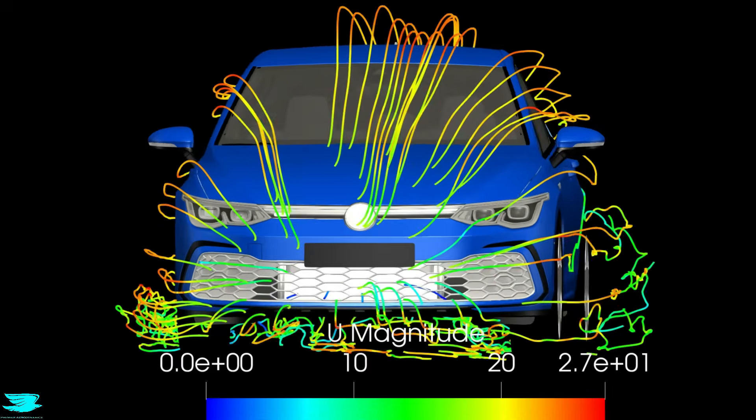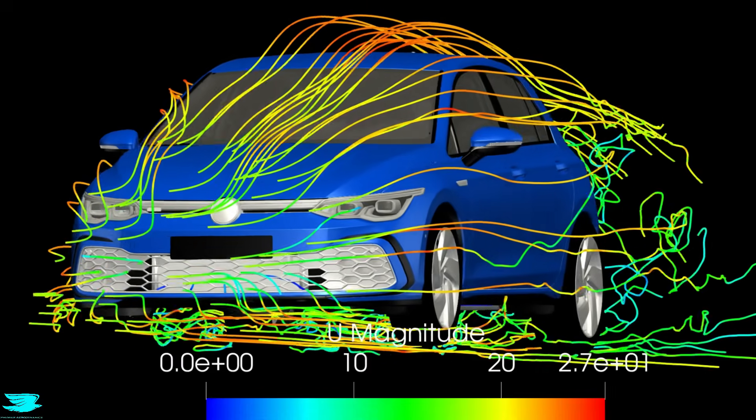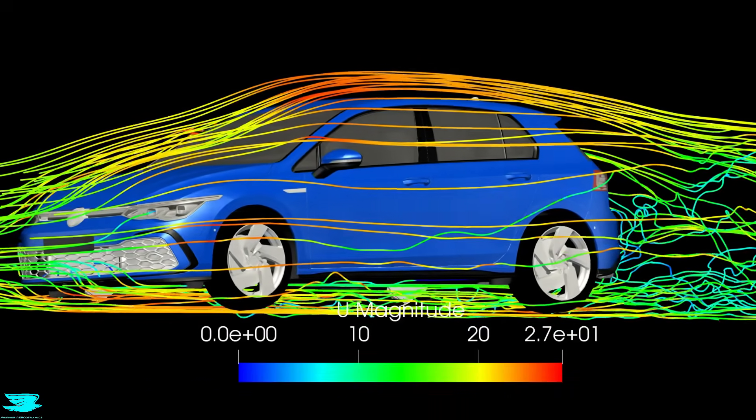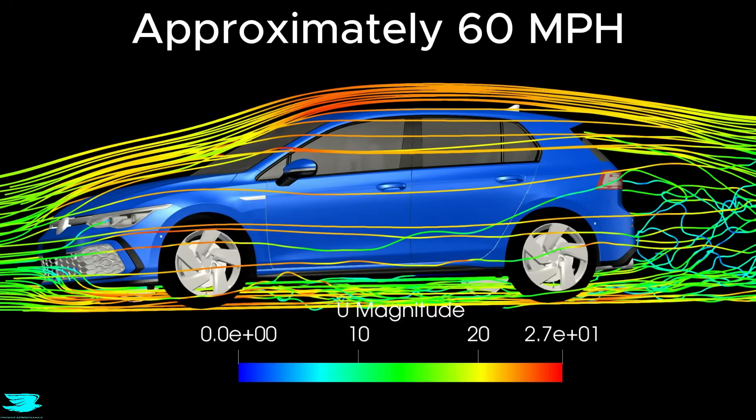We first have these streamlines showing the general path of the flow around the car. They are also colored in the velocity, where blue is 0mps and red is 27mps.